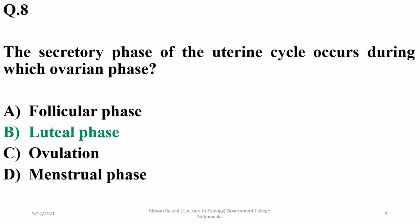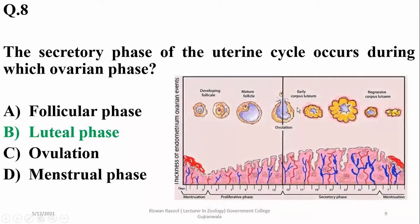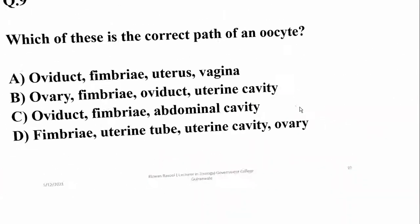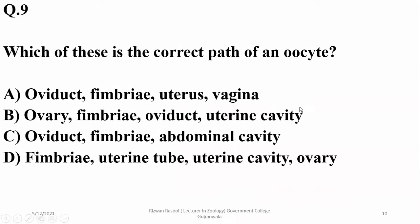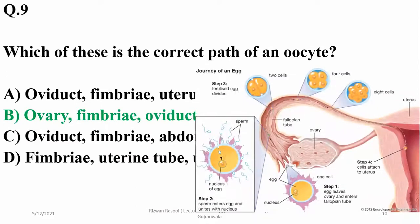Question number nine: which of these is the correct path for an oocyte? The oocyte moves from the ovary to the fimbriae, then to the oviduct, and then the uterine cavity. As you can see the path of an oocyte.